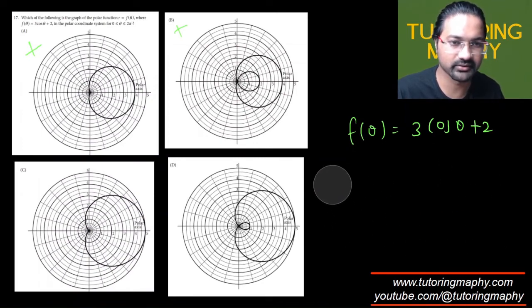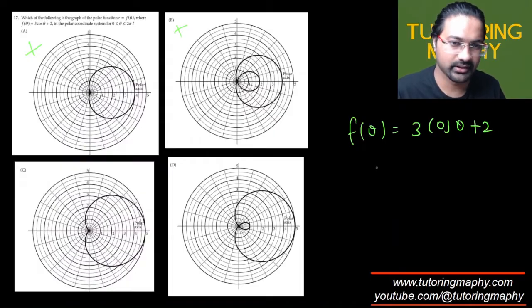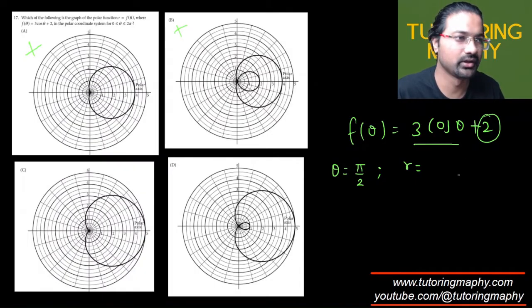If I put θ = π/2, at π/2 what is the value of cos(θ)? Cos(π/2) is 0, so this will become 0 and the equation becomes 2. This means that r = 2.